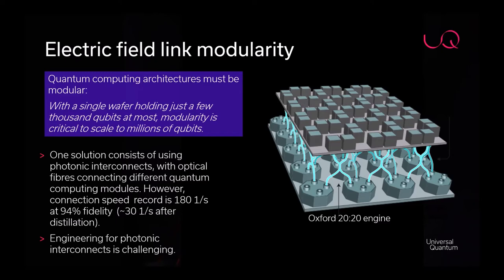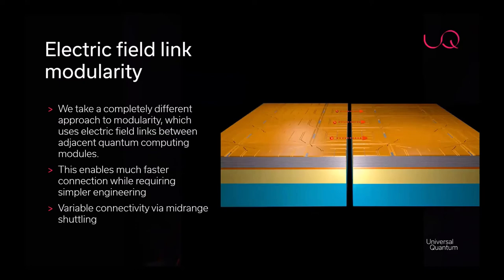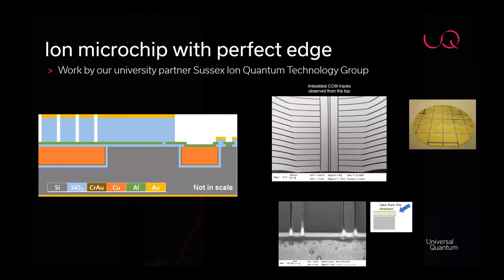We developed an alternative approach: we shape the electrodes on the edge of each quantum computing module to produce electric field links between modules, simply transporting ions from one module to another. This is orders of magnitude faster than photonic interconnects while requiring much simpler engineering. It also allows variable, nearly all-to-all connectivity for qubit numbers below around a thousand — obviously very powerful for executing practical algorithms.